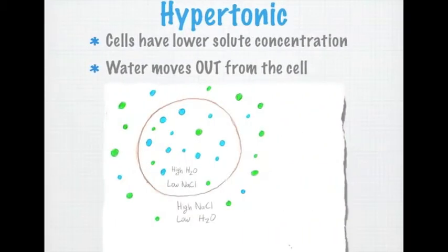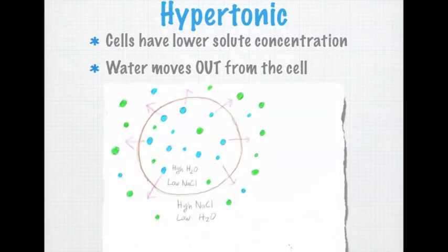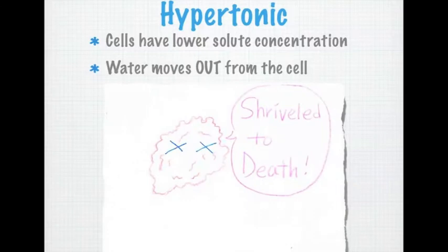When a solution is hypertonic to a cell, it means it has a higher concentration of solutes than the cell. Due to the process of osmosis, water leaks out from the cell to the solution, causing it to shrivel up and eventually die.